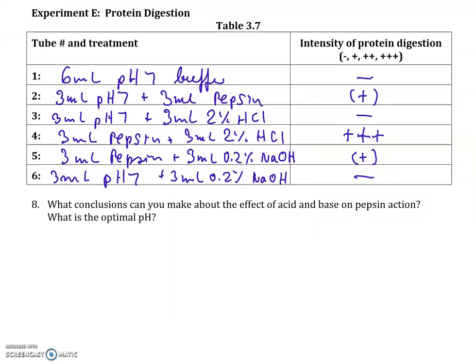Moving on to experiment E: protein digestion. The protein being digested is gelatin, which is the coating on x-ray film. This was undeveloped x-ray film — a plastic sheet coated with gelatin. We use little strips or squares of that film to measure protein digestion by the amount of clearing of the gelatin from the plastic backing. Test tube 1 had just 6 mL of pH 7 buffer and no enzyme, so we expect no protein digestion — a completely negative result.